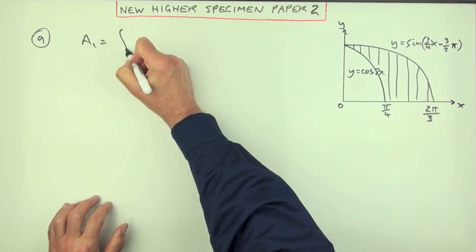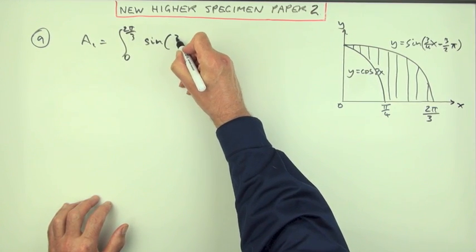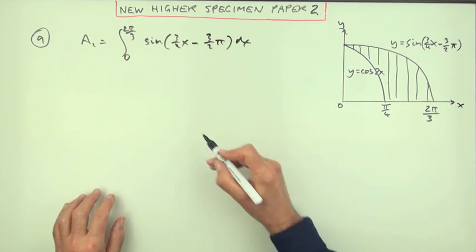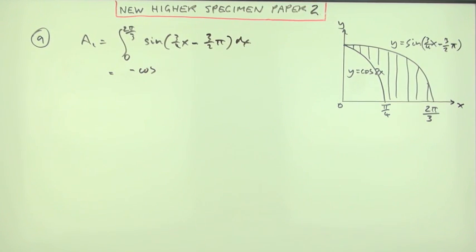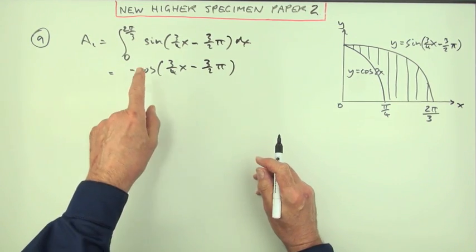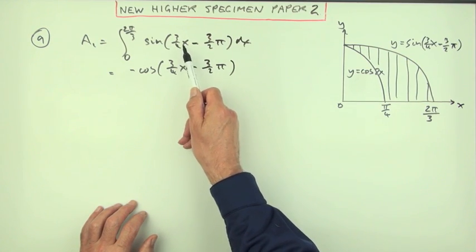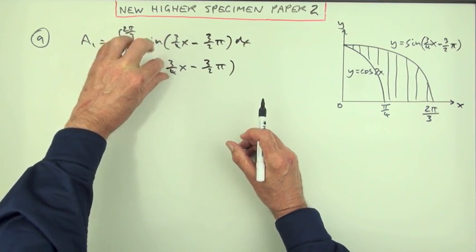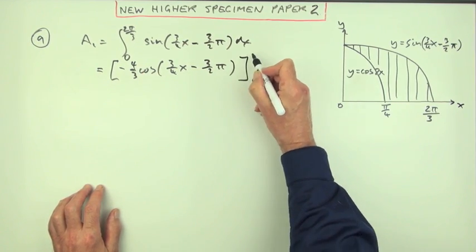We'll call that Area 1. The big one goes from zero to two pi upon three of sine of three quarters of x minus three pi upon two, dx. Sine would have come from cosine, but it would have had to come from a negative cosine, and it's not just of x — it's of some function of x. If you were differentiating you'd multiply by the derivative, which is the coefficient of x — three quarters — so when integrating you divide by three quarters, which is the same as multiplying by four upon three.